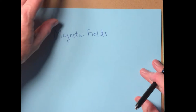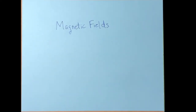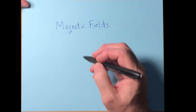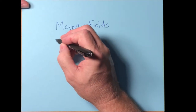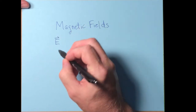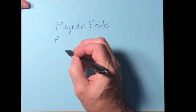Let's talk about magnetic fields. We've already talked about electric fields, so you've been introduced to the concept of a field. When we talked about electric fields, we used the symbol E, and you know that it's a vector — it's a vector field.